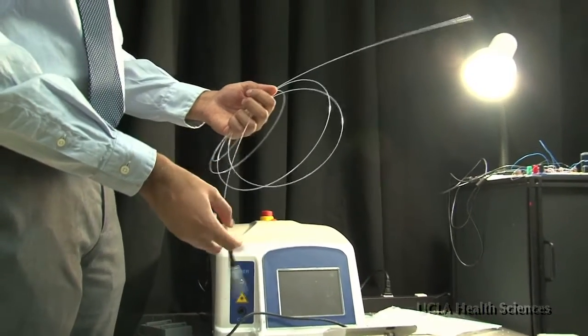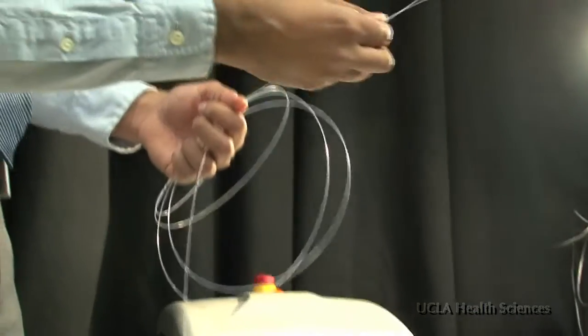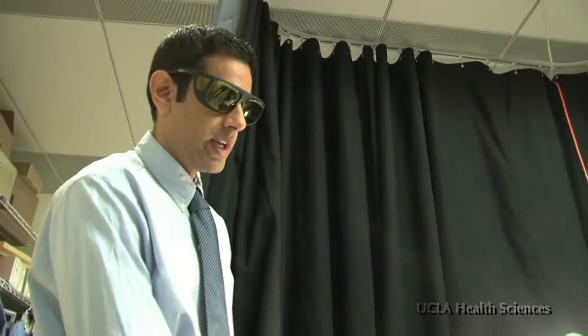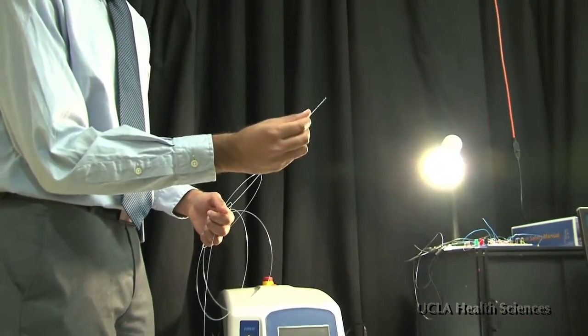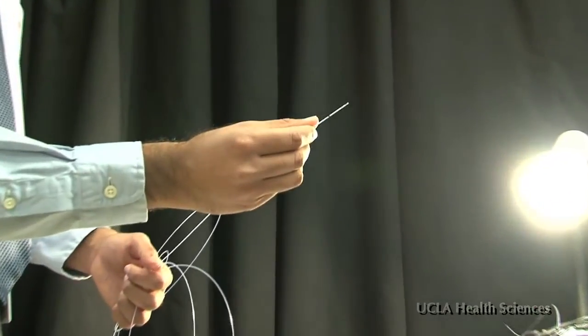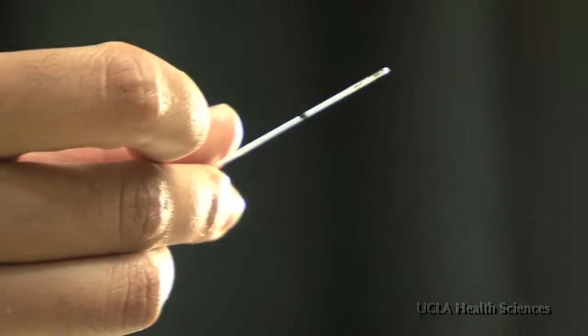This is a laser fiber that we use to ablate prostate cancer. The end of the laser fiber contains a device called a diffuser, which, rather than focusing the energy on a single point, spreads the energy out like a light bulb.